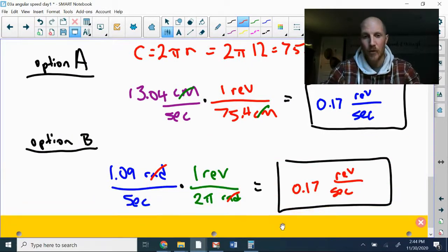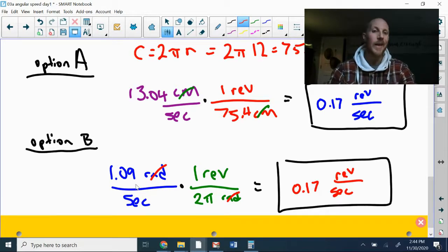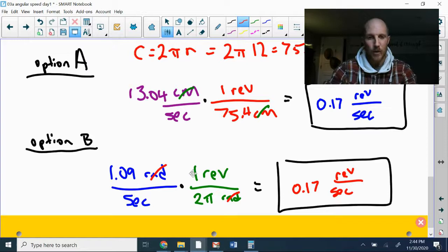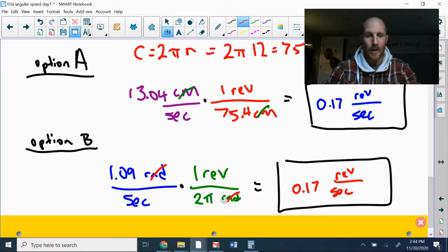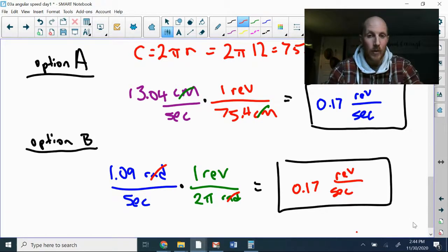Option B: it's going to give us the same answer, but instead of starting from this purple linear speed, I'm going to use the blue angular speed from question three, and the conversion factor from angular speed to rotational speed is one revolution and 2π radians. And that gives me the same answer, so it's just a matter of preference which one you want to work from.